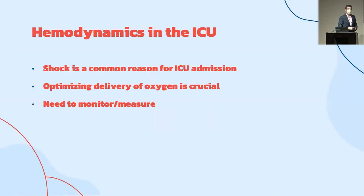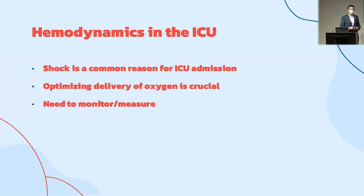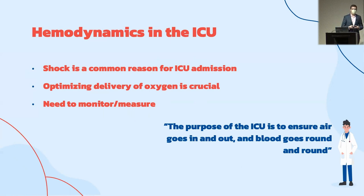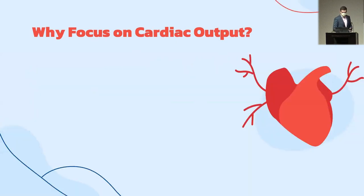Shock is a really common reason for ICU admission. We know that optimizing the delivery of oxygen is crucial, and we have to have some way to measure and monitor this. The purpose of the ICU is to ensure that air goes in and out and blood goes around and around — and the longer I work in an ICU, the more I realize how true that is. But the question is: why do we focus on cardiac output?